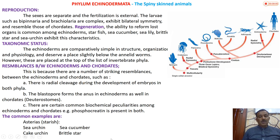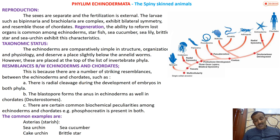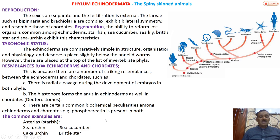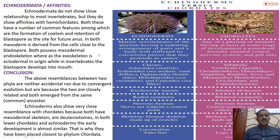There are also certain common biochemical peculiarities between echinoderms and chordates. For example, phosphocreatine is present in both groups. Common examples of echinoderms include starfish, sea urchins, sea cucumbers, cake urchins, and brittle stars.